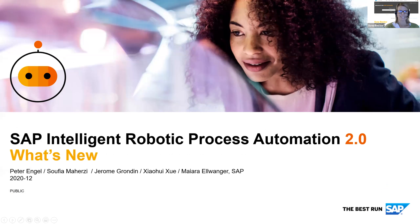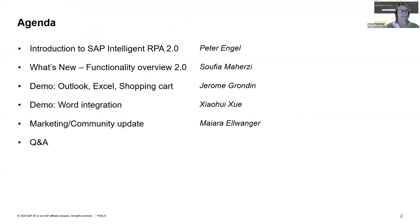Hello and welcome to today's SAP community call. I'm Svea Becker, part of the SAP community team, and I'm really happy to have a great team on board to present updates about what's new in SAP Intelligent RPA 2.0. We have Peter Engel, solution owner for SAP Intelligent RPA, who will start the presentation. Afterwards, we have Sophia Mahersi, a product specialist in the same team, then Jérôme Grodin, specialist in customer solution adoption, followed by Xiaoui, software development manager, and finally Mayara Elvanger, also part of the SAP Intelligent RPA solution management team.